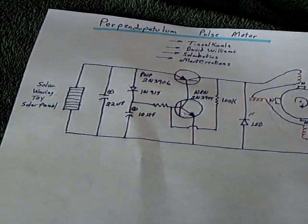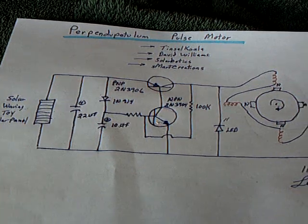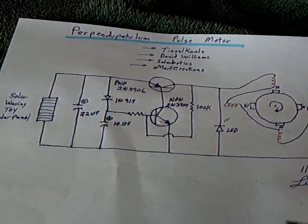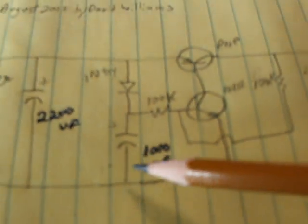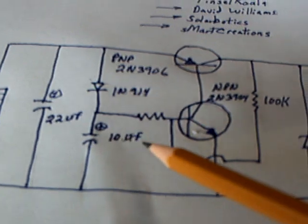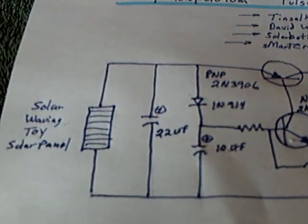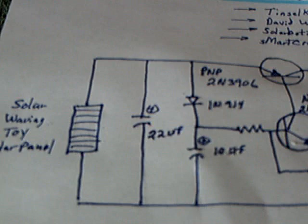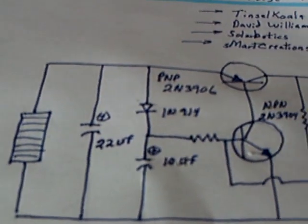And this is the circuit I came up with. I changed a couple of things, but very small changes. Instead of these capacitors, 2200 microfarad and 1000, I dropped it down to 22 microfarad and 10 microfarad. And it's just running off that solar waver solar panel.